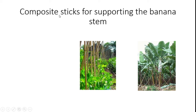Composite sticks with composite material research is important for supporting the banana stem. This is an important topic needed in the agricultural area. Consider these topics in your research — we can identify newer materials for supporting elements in our agricultural land. Thank you all.